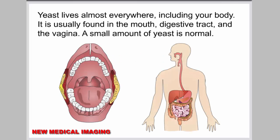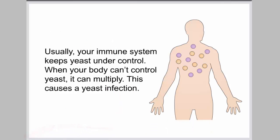Yeast lives almost everywhere, including your body. It is usually found in the mouth, digestive tract, and the vagina. A small amount of yeast is normal. Usually your immune system keeps yeast under control. When your body can't control yeast, it can multiply. This causes a yeast infection.